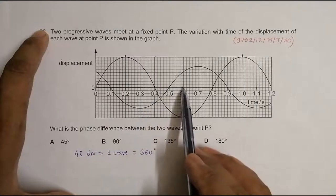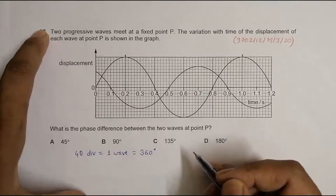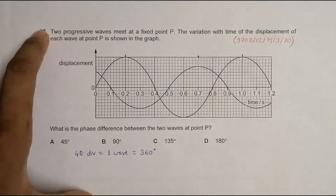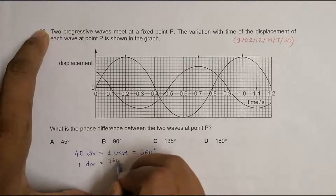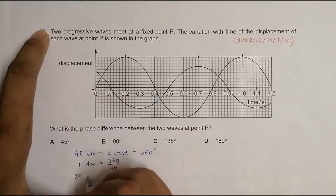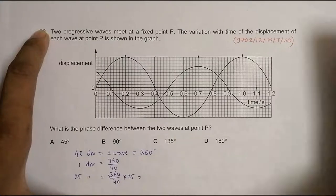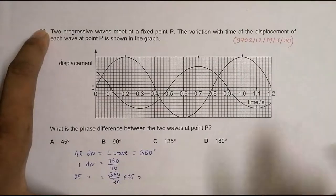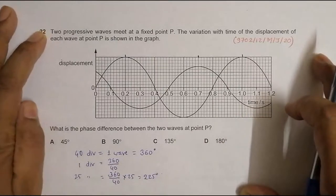Now the other wave is from here to here, which is 25 divisions. So this means one division is equal to 360 by 40, which means 25 divisions is equal to 360 by 40 into 25. So it is 225 degrees. It's not in the choices, but what you can do is we can see in the reverse way also.